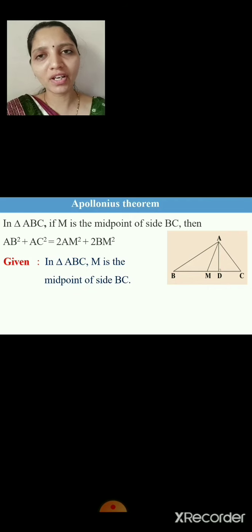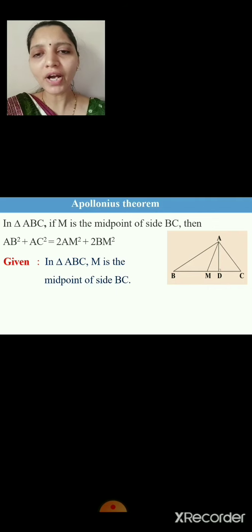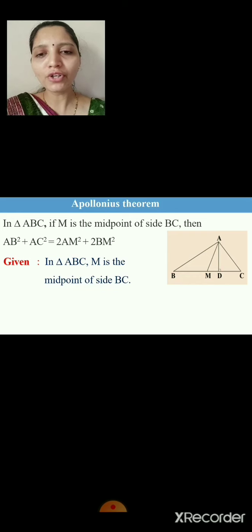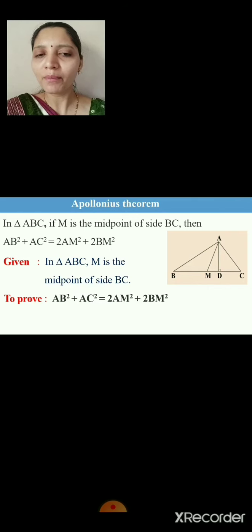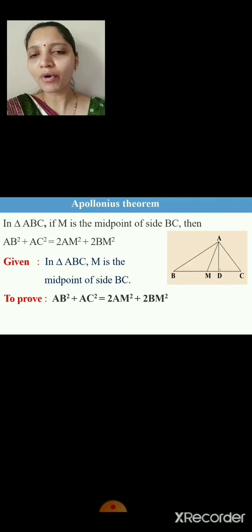Let's start writing the theorem. Given: in triangle ABC, M is the midpoint of side BC. To prove: AB² + AC² = 2·AM² + 2·BM². Since M is the midpoint of side BC, we can say BM = MC.